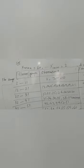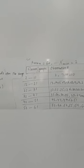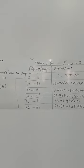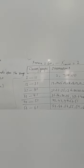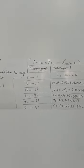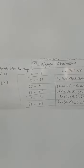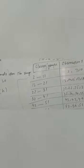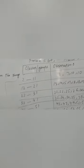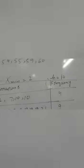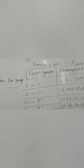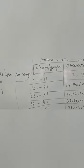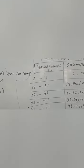We need to create a continuous frequency table with 3 columns: one for class/group intervals, one for observations (tally marks), and one for frequency. We start from the minimum value, which is 2. Since the class interval size h is 10, the first class goes from 2 to 11.